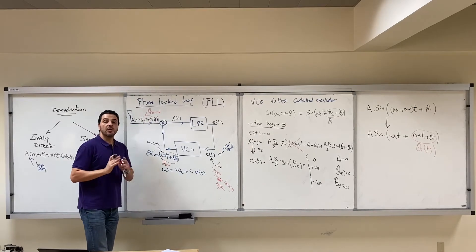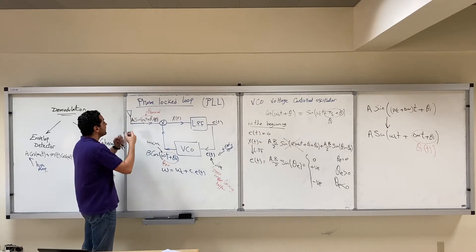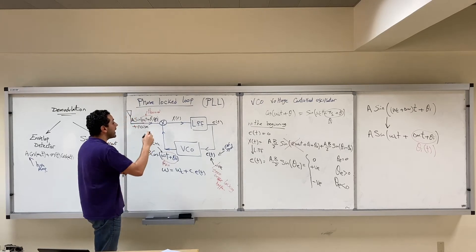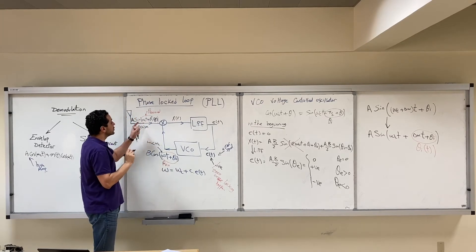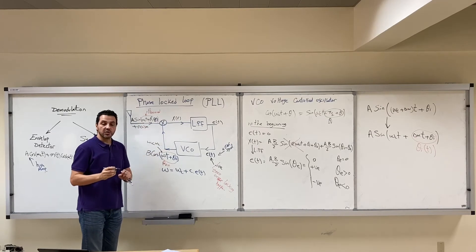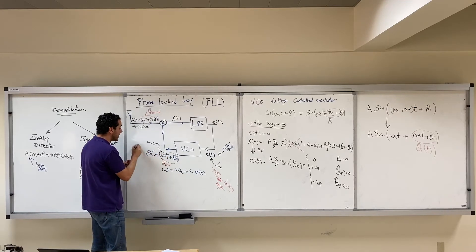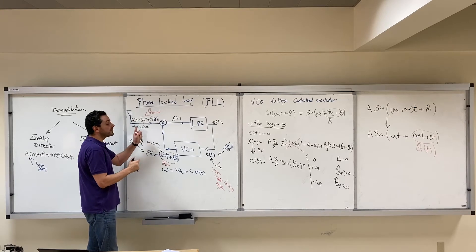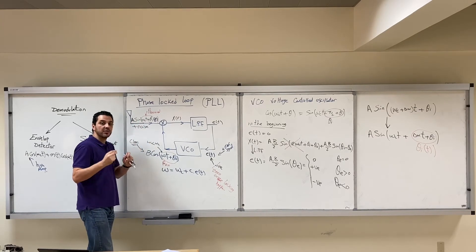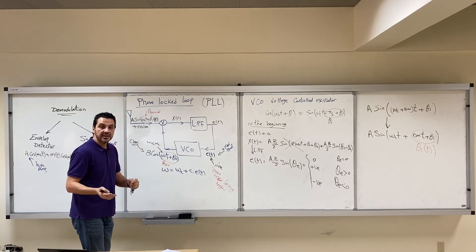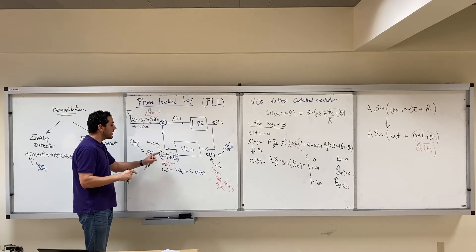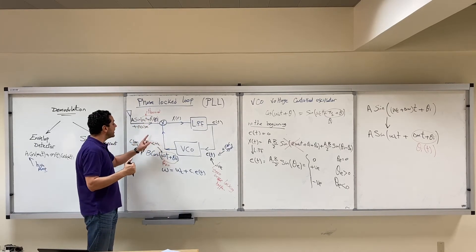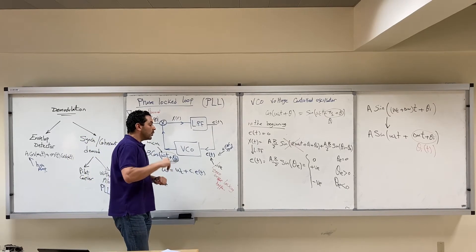The phase-locked loop will track the exact frequency and phase of the incoming signal. Furthermore, if the received signal contains undesired noise, the PLL will synchronize with the sinusoidal component and give you a clean sinusoidal signal perfectly synchronized in frequency and phase with the received sinusoid, completely getting rid of the noise.